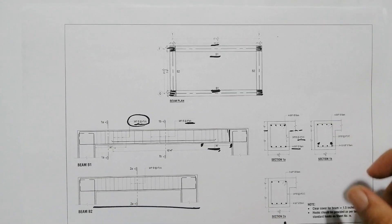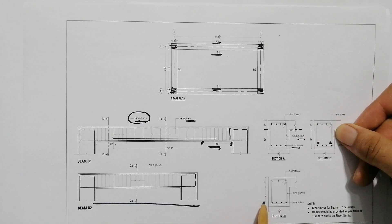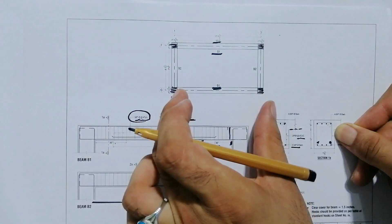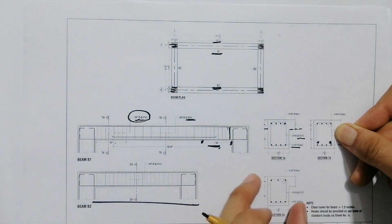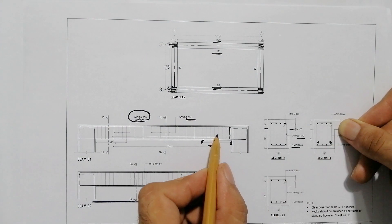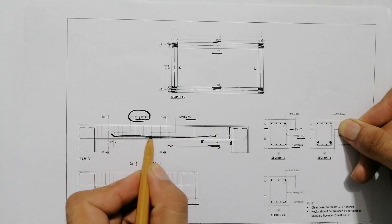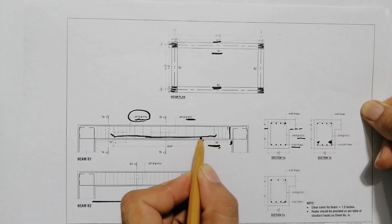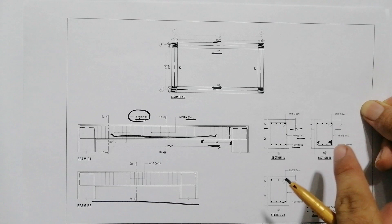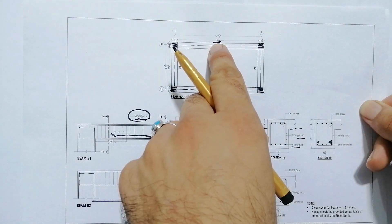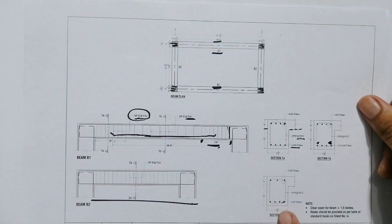For short beam B2, this is Section 2A. The depth of the beam is 12 inches and the width is 13.5 inches — same, because the long beam and short beam are the same structure size. But here, as you can see, there are no extra bars. In the long beam I discussed 4 plus 2 — those 2 extra bars at mid-span handle the higher bending moment, since the long span is 16 feet versus about 7.5 feet for the short beam.